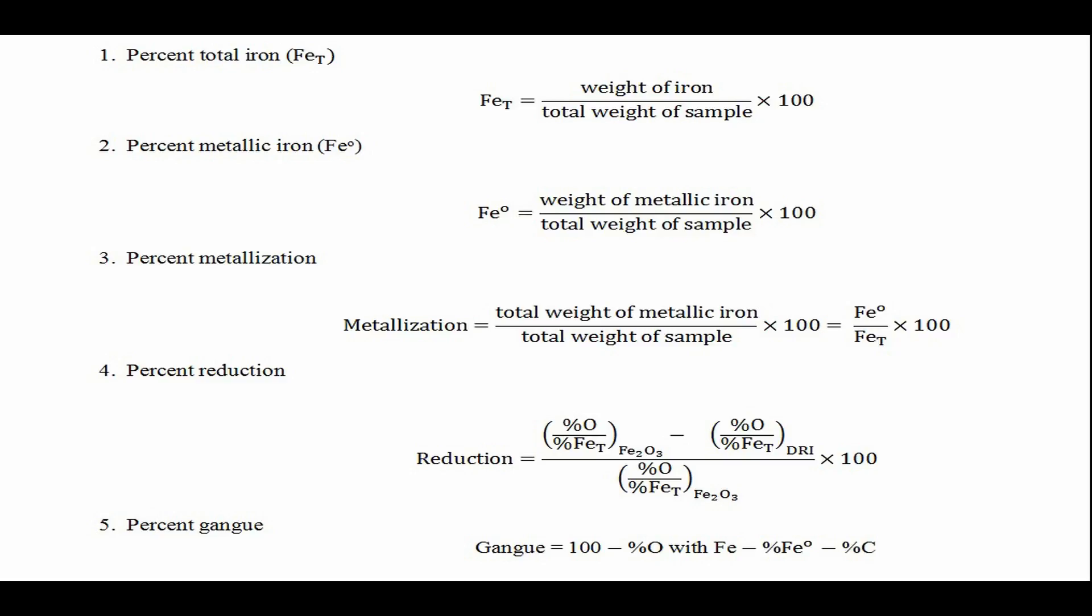One: Percent total iron is the total iron in a sample, including metallic iron and iron chemically combined with other elements such as oxygen.